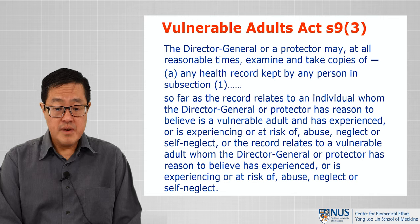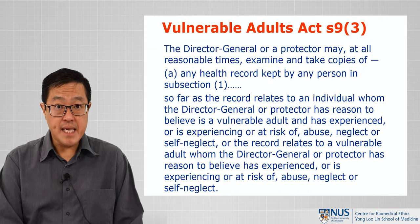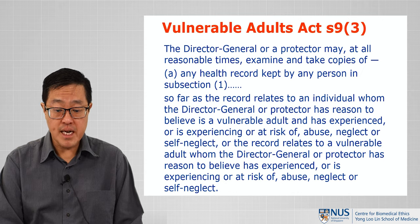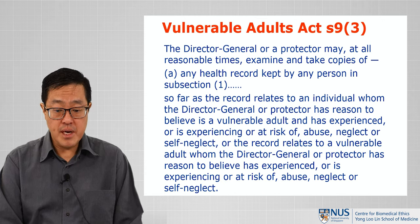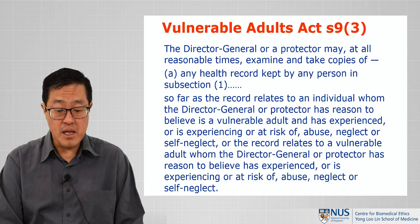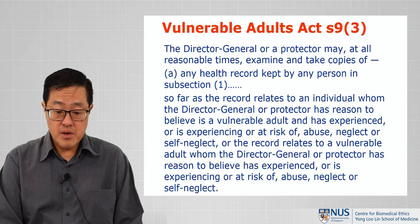Under the Vulnerable Adults Act, the Director General or a Protector may at all reasonable times examine and take copies of any health record kept by any person, so far as the record relates to an individual whom the Director General or Protector has reason to believe is a vulnerable adult and has experienced, is experiencing, or is at risk of abuse, neglect, or self-neglect.